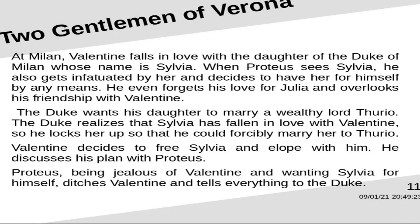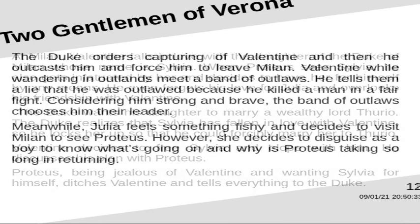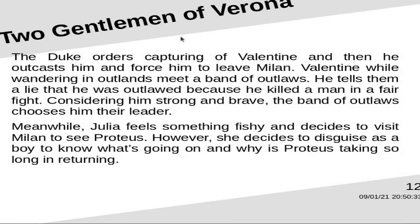Valentine decides to free Sylvia and elope with her. He discusses his plan with Proteus. Proteus, being jealous of Valentin and wanting Sylvia for himself, ditches Valentin and tells everything to the Duke. The Duke orders Valentin to be captured and outcasts him, forcing him to leave Milan. While wandering in the outlands, Valentin meets a band of outlaws. He tells them a lie that he was outlawed because he killed a man in a fair fight. Considering him strong and brave, the outlaws choose him as their leader.